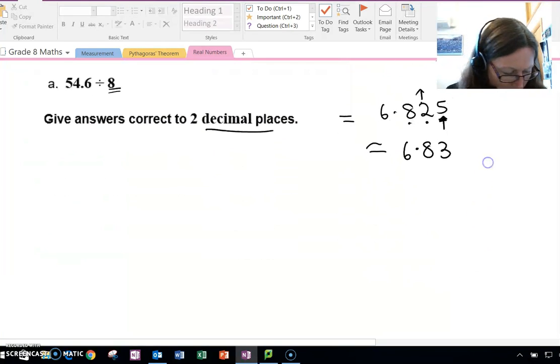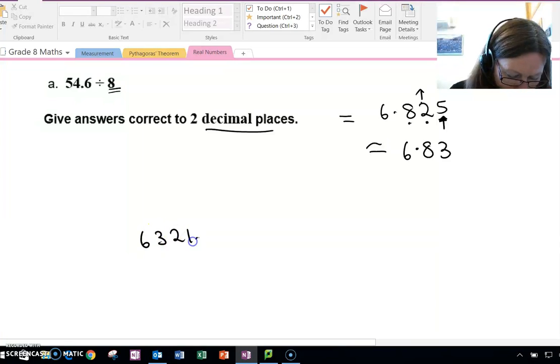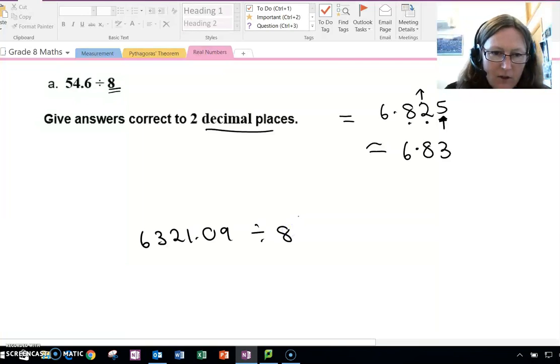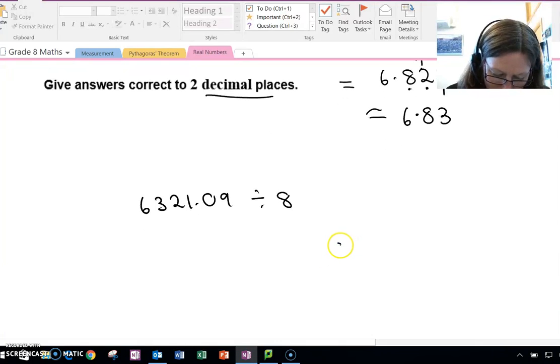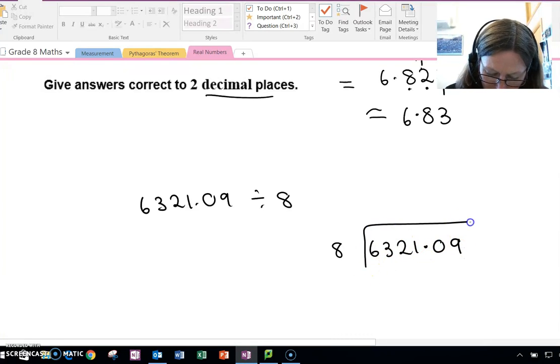We'll do another example. So if I have 6,321.09 divided by 8. First step, make sure the divisor, the number that we're dividing by is a whole number, and as I said in this video, it's going to be a whole number. Once it's a whole number, divide in the normal way. So I say 8s into 6,321.09, divide in the normal way.